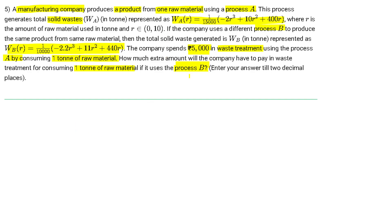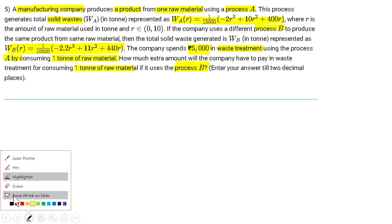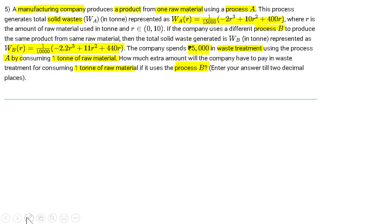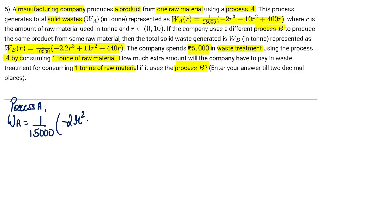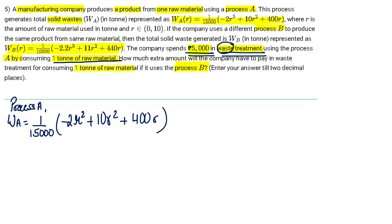So we have to calculate the extra money when using process B. In process A, the waste equation is given as: W_A = (1/15000) × (−2r³ + 10r² + 400r). Since we are given that using one ton of raw material costs ₹5000 for waste treatment, let's first calculate the waste generated when r = 1.